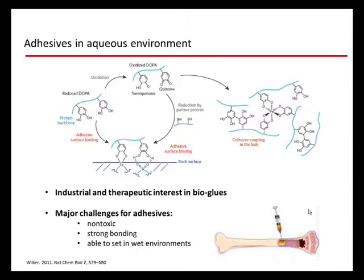Here we see an example of how this works. If you have a rock surface with metal ions, or anions like oxides, the catechol can be in an oxidized or reduced form — a semiquinone, quinone, or dehydroxylated form. In this interesting cycle, we can have a highly controlled redox process which enables adhesive surface binding. This binding can also take place in the bulk through so-called cohesive coupling. These materials could be of high interest because they are bioglues of high industrial and therapeutic potential.